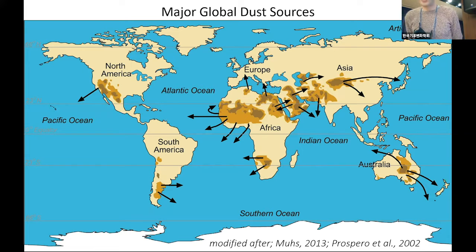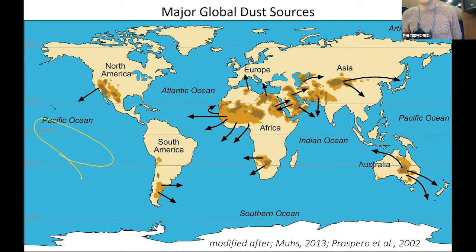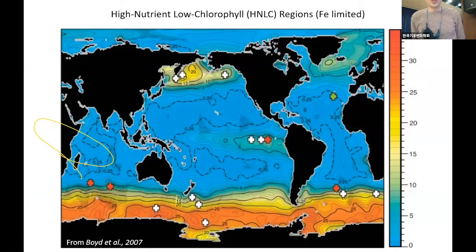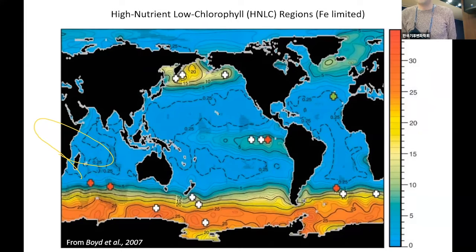I was particularly looking at dust source areas in South America, specifically in southern Patagonia. From there, dust is emitted with the westerly winds, traveling east into the Southern Ocean. To the southeast of Patagonia, the areas marked in orange and red on this diagram are high-nutrient low-chlorophyll, iron-limited areas of the Southern Ocean, where dust emissions from Patagonia could remove iron limitation.